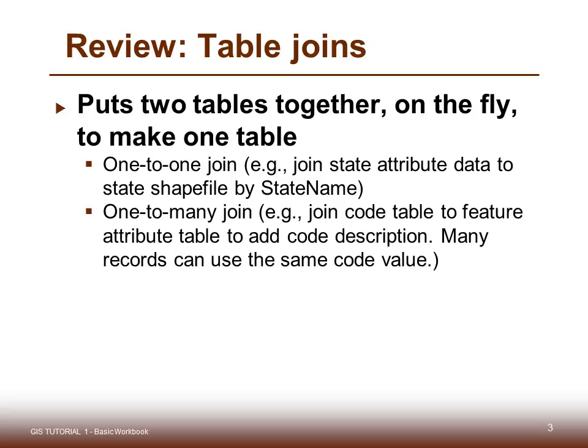First, a brief review on table joins. Table joins put two tables together on the fly, meaning it's something you do on a temporary basis in order to make one table — not a permanent editing change. A one-to-one join, for example, is where a state attribute data table is joined to a state shapefile by state name. You may also do a one-to-many join, where you join a code table to a feature attribute table to add a code description. Many records may use the same code value.